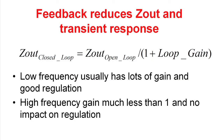The load transient response of your power supply is set by the output impedance of the power supply. High output impedance means poor load transient response; low output impedance means very good transient response. The closed loop output impedance is set by the open loop output impedance divided by 1 plus the loop gain. At very low frequency, you usually have lots of gain and regulation is very good. At high frequency, your loop gain has fallen below 1 and your output impedance is simply your open loop output impedance.